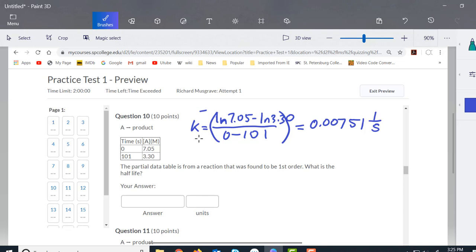Now the half-life has the formula natural log of 2 over k, or 0.693 is the other way you'll see that expressed as well.